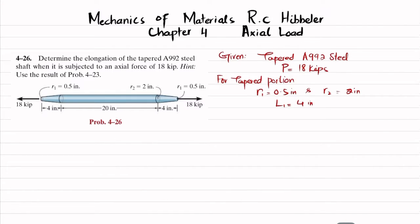For uniform rod portion, its length is equal to L2 and that is taken as 20 inches. And diameter is equal to 1 inch, or radius is equal to 0.5 inch.